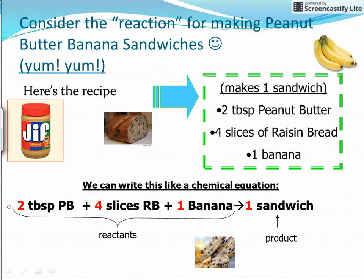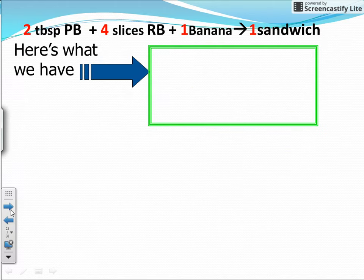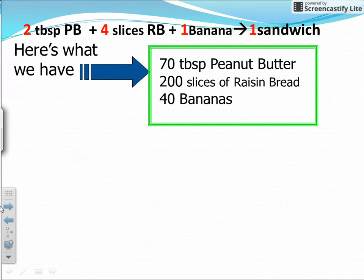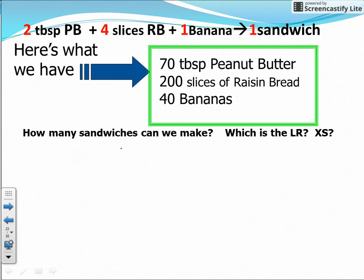Now let's look in our cupboard and see what ingredients we actually have on hand: 70 tablespoons of peanut butter, 200 slices of raisin bread, and 40 bananas. The question is: how many sandwiches can we actually make with these ingredients, which is the limiting reactant, and which reactants are in excess?